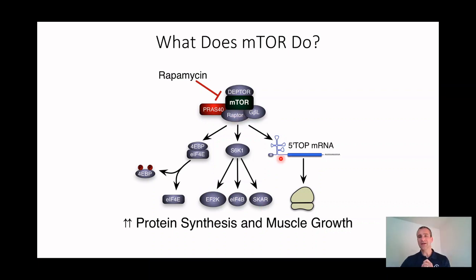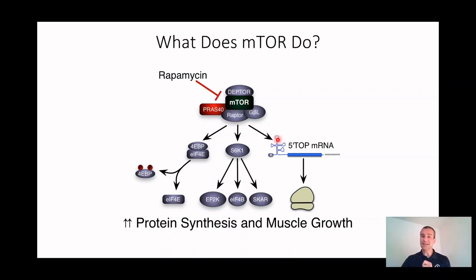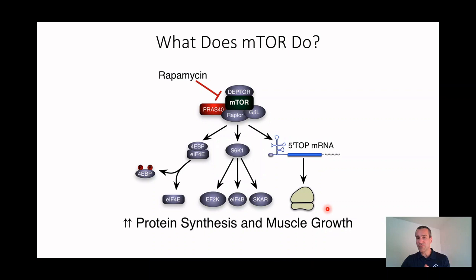mTOR can also affect 5' TOP mRNAs — not by phosphorylating them directly, but by regulating LARP1, an LA-related protein. LARP1 allows translation of these messages, which have a lot of secondary structure. Essentially all ribosomal proteins have these 5' TOPs in their 5' untranslated region, so you only synthesize ribosomal proteins when mTOR activity is high. This is one way you get more ribosomes — activating existing ribosomes through S6 kinase and 4EBP liberation, while making new ones through LARP1.